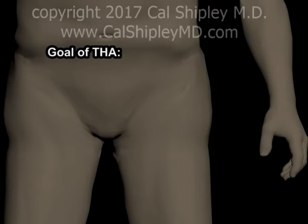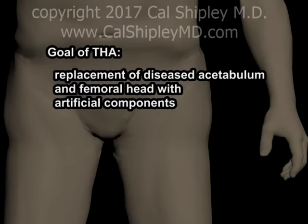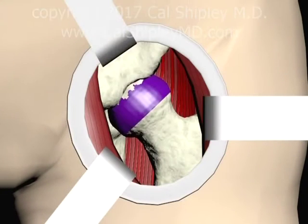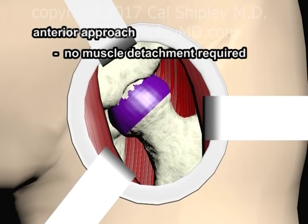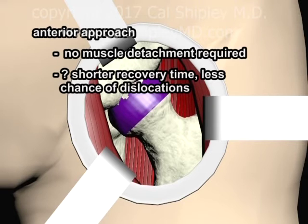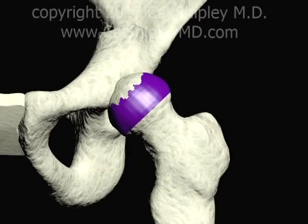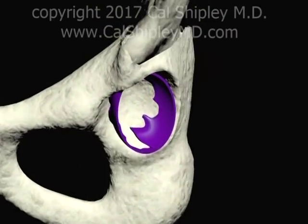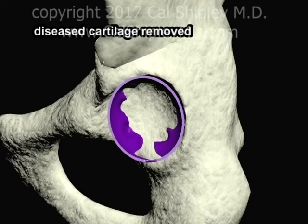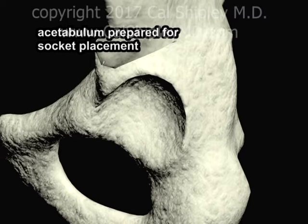While there are different techniques and approaches preferred by different surgeons, the goal of all THA procedures is replacement of the diseased acetabulum and femoral head with artificial components. For the purposes of this review, I am going to depict the so-called anterior approach, whereby the hip joint is entered from the front of the patient. One advantage of the anterior approach is that it does not require detachment of any of the muscles around the hip joint. Some studies indicate that this approach is associated with a more rapid recovery and a reduced chance of dislocations postoperatively. The next step is to dislocate the head of the femur in order to permit access to the acetabulum. The diseased cartilage in the acetabulum is then removed, and the bone of the acetabulum is surgically prepared for placement of an artificial socket.